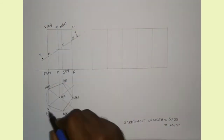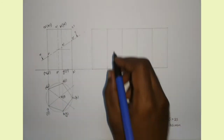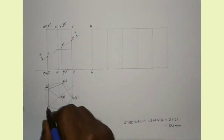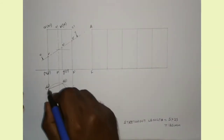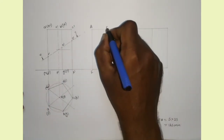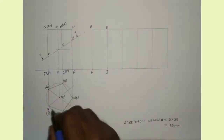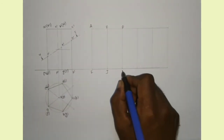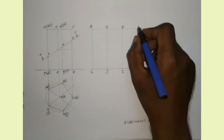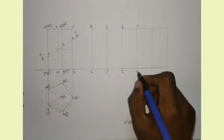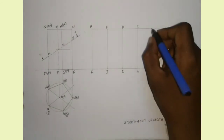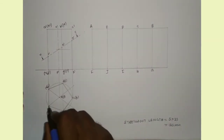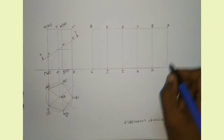I am opening the prism from the lateral edge AF. So I am marking AF there. Similarly, the next lateral edge is EJ, and the next edge is DI. Then CH, then BG, and finally AF again. We have to name all the points using capital letters.